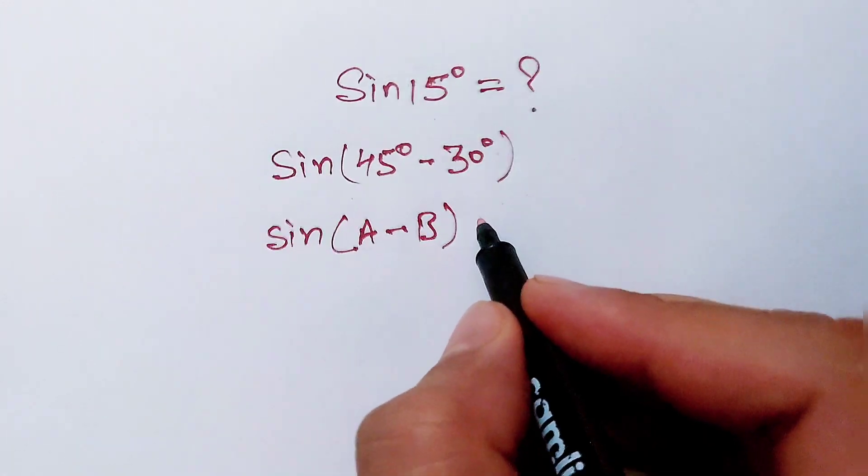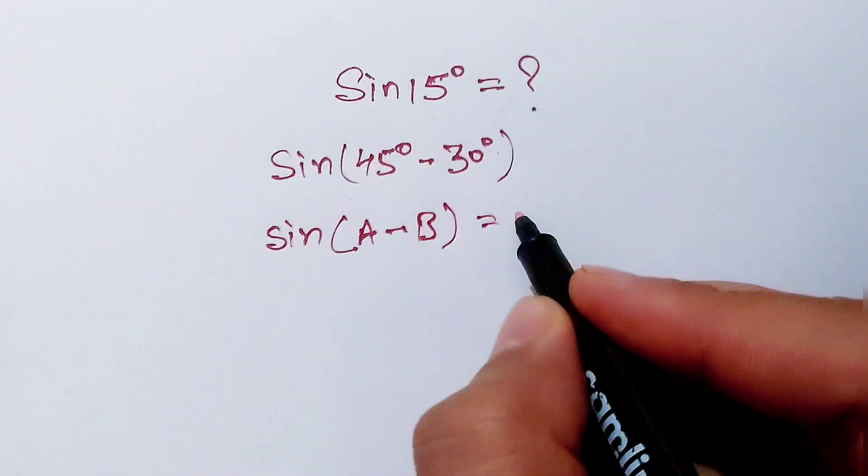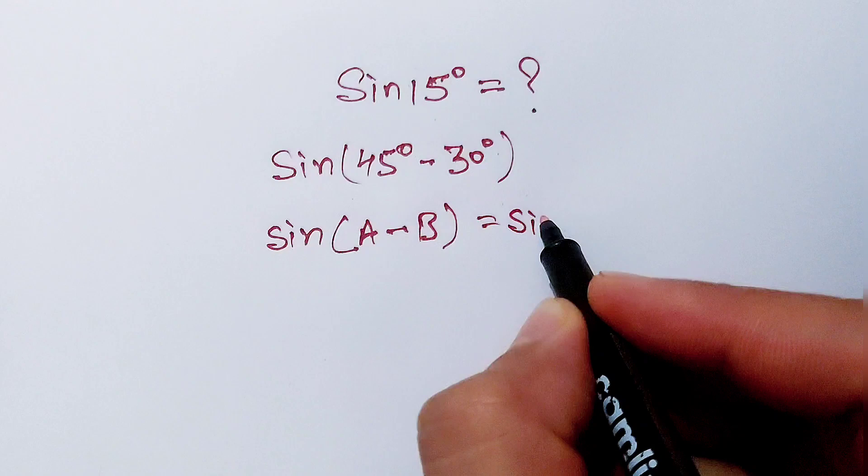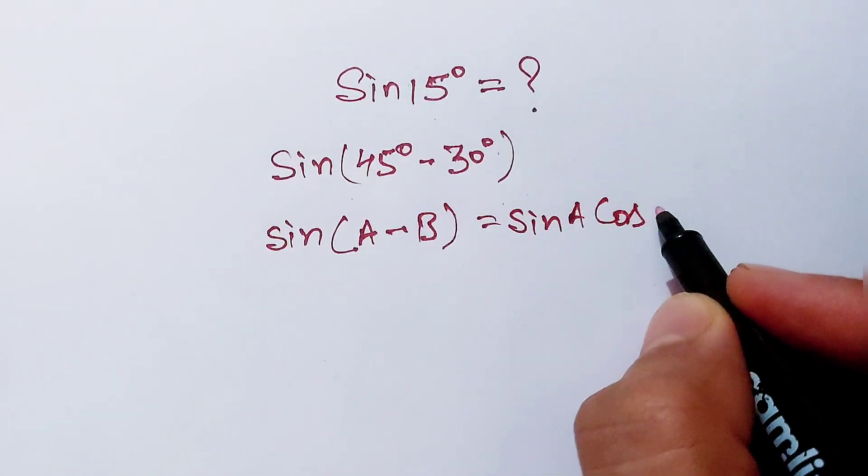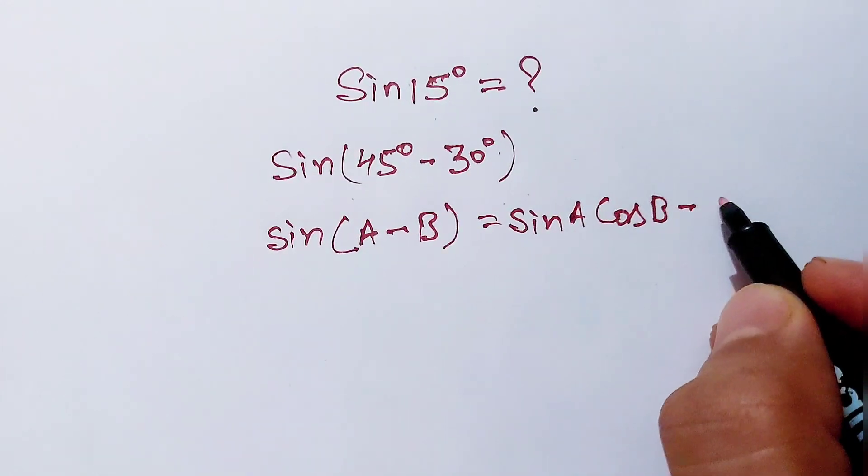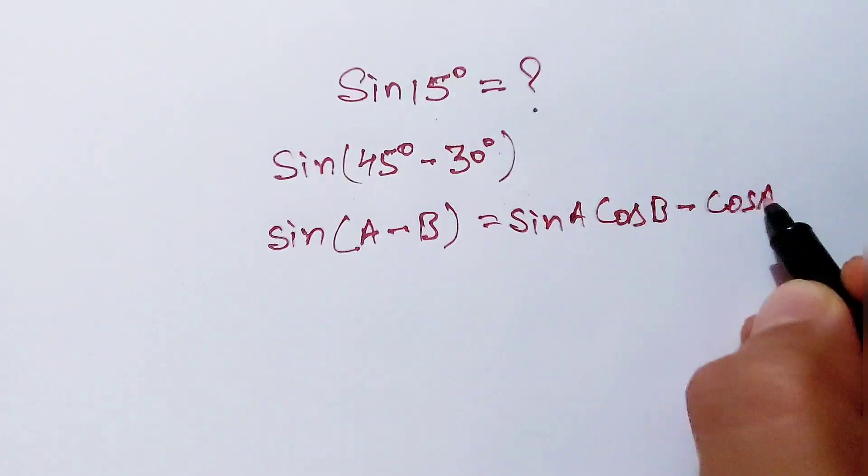Now here, sine A minus B, you should know the value of this: sine A minus B is equal to sine A cos B minus cos A sine B.